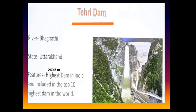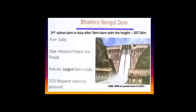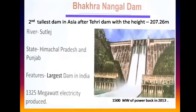Now this dam is Bhakra Nangal Dam. This dam is built on the Satluj River, and from this dam we produce 1,500 megawatts of hydroelectricity. This dam is considered the largest dam in India.